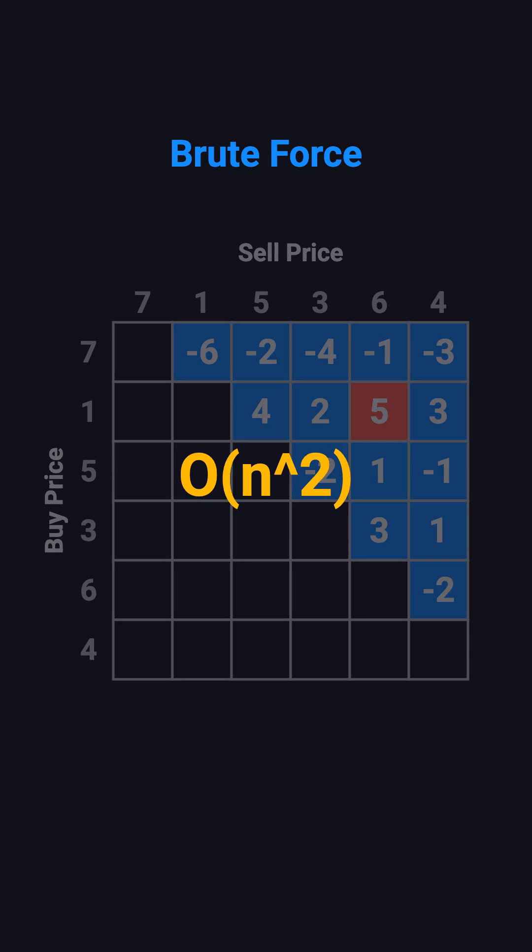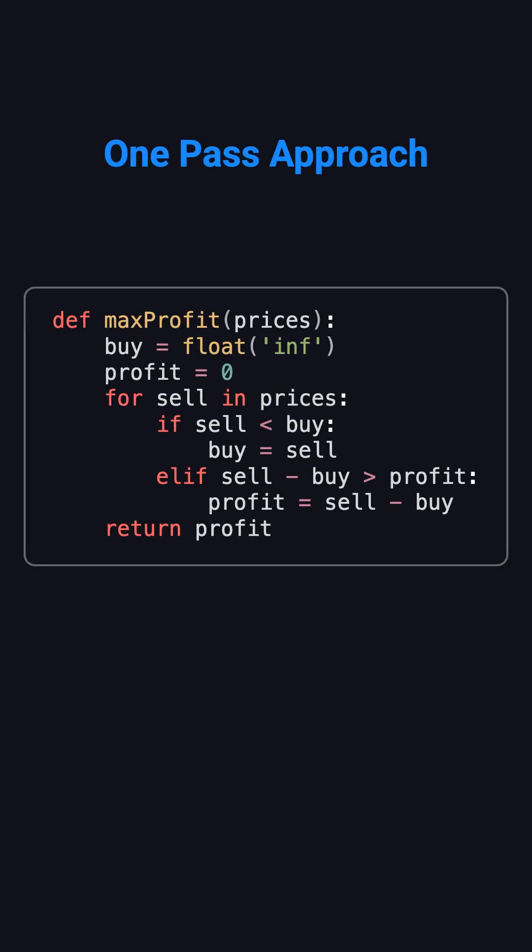So is there a smarter way? Yes, there is. We can solve it in just one pass. The idea is simple: as you go through the prices, always keep track of the lowest price so far. Each day, you can quickly calculate the profit if you sold today, and then update the maximum profit if it's higher.